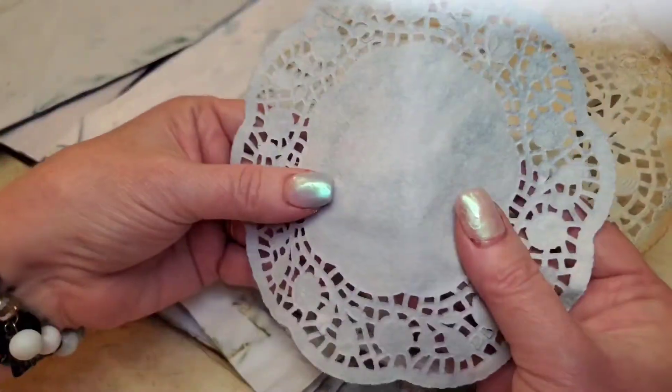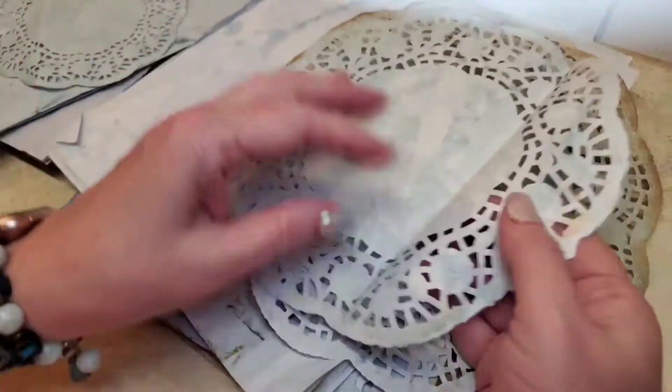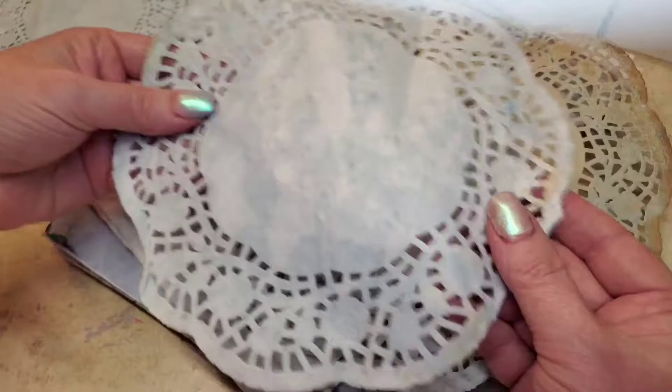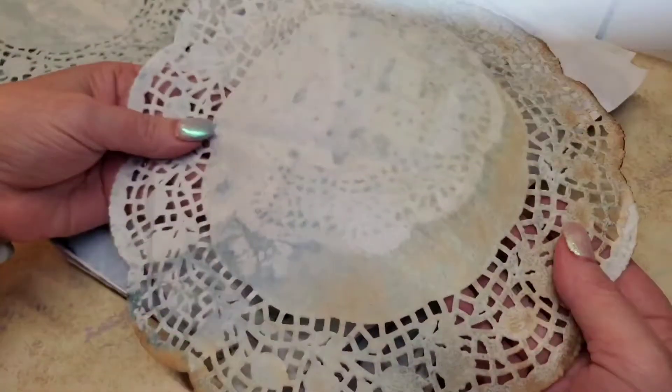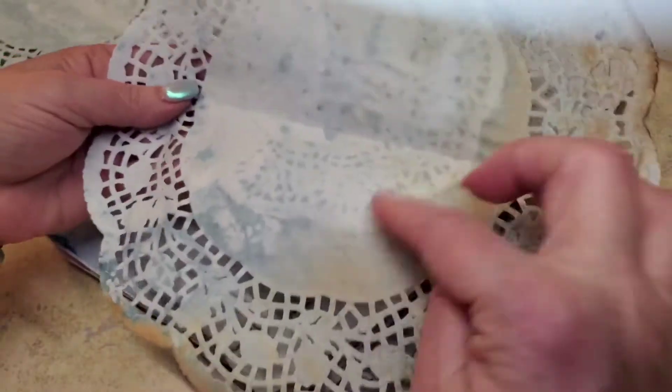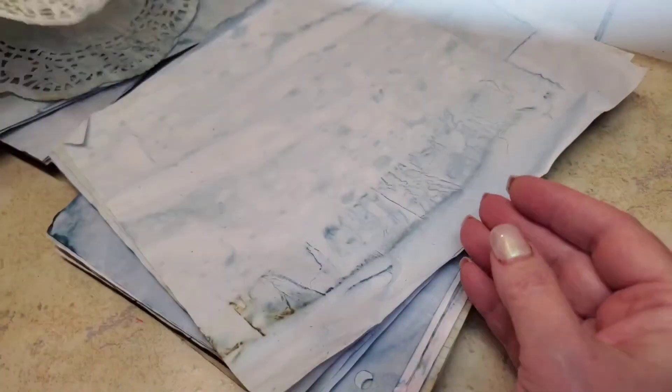Three doilies. You get one small, one medium, and then one large. And I don't know why that one just decided to turn colors right there.